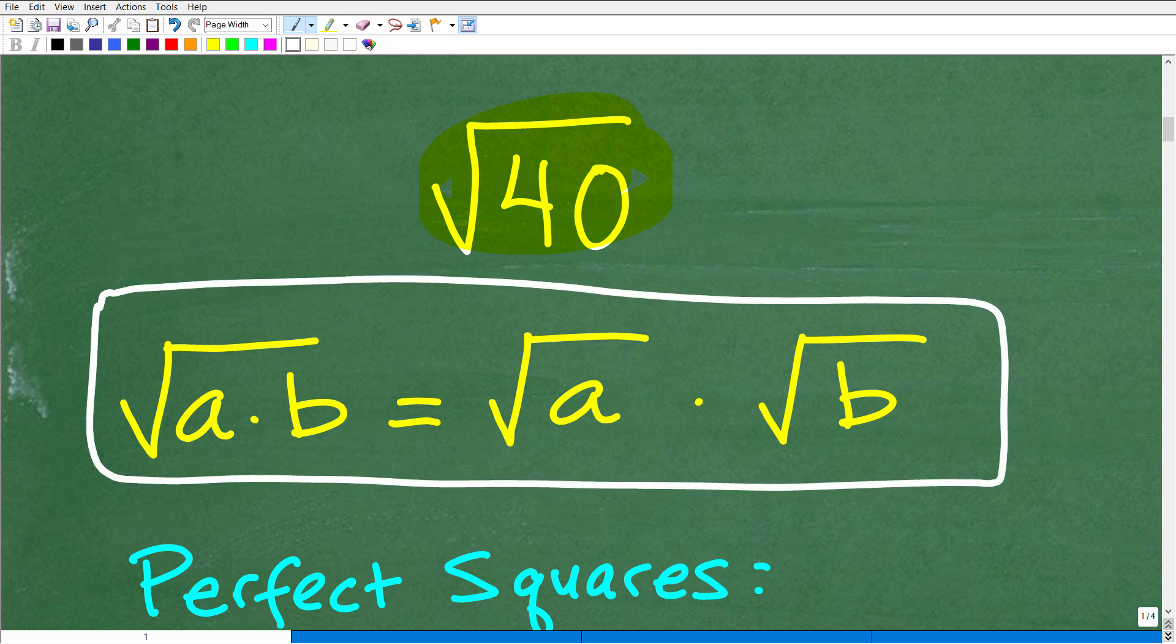This property states that when we take the square root of a number, like the square root of 40, if we find factors of that number—here, the rule is factors are A times B. So those are two or more numbers such that you multiply them together, you get back to this value. So by taking the square root and we're looking at the factors of a particular value, we can actually write it as the square root of one factor times the square root of another factor.